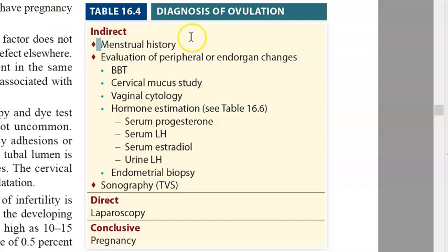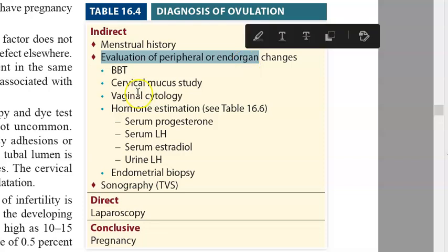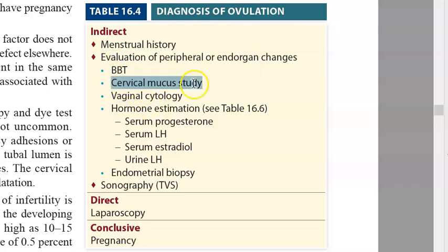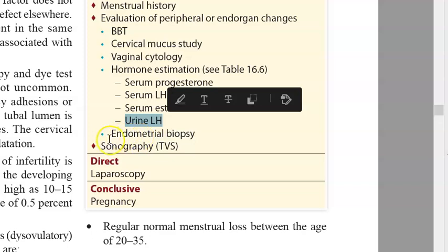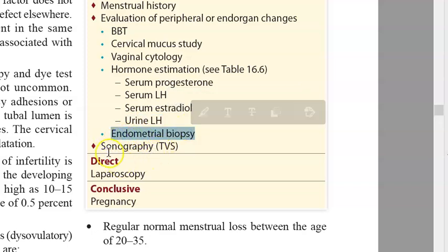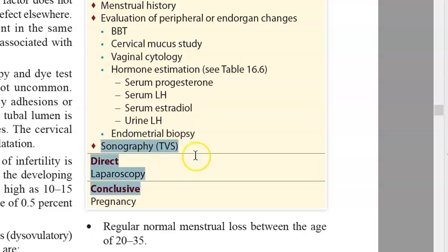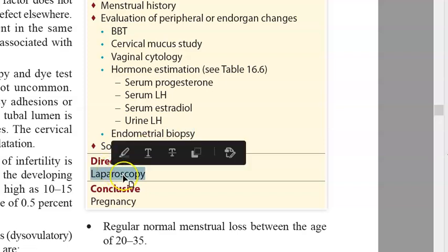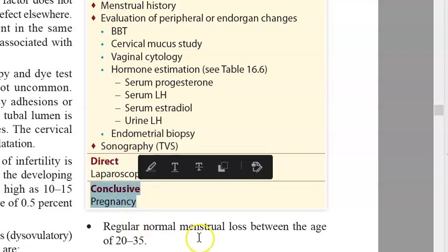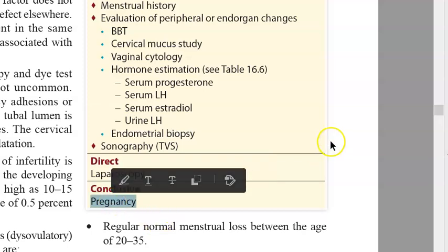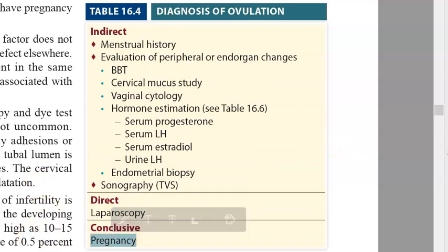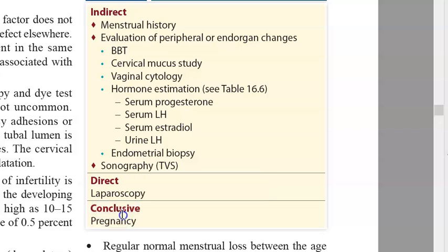To know if a person is ovulating, you can take a menstrual history checking for regular cycles. You can check basal body temperature, cervical mucus, vaginal cytology, and hormones - estrogen, progesterone, urinary LH, serum LH. You can do endometrial biopsy to check if it is secretory, transvaginal ultrasound, and laparoscopy. All these are indirect methods; the conclusive evidence is a pregnancy.